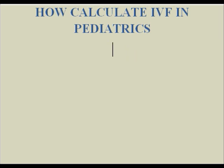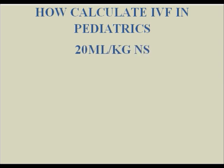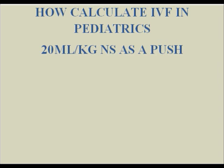Before we learn how to calculate IV fluids for pediatrics, the most important thing to remember is: if the patient is in severe dehydration — you know the signs and symptoms — if it is severe, don't waste time calculating IV fluids. You need to give 20 ml per kg of normal saline as a push, if you are suspecting severe dehydration.